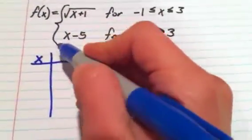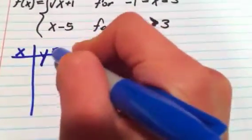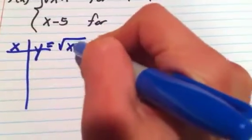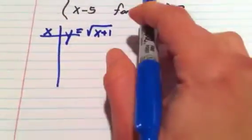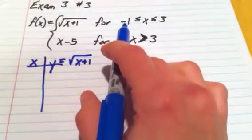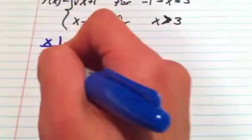So y will equal the square root of x plus 1 for x's that are between negative 1 and 3. So I'm going to put in x's between negative 1 and 3. So negative 1, 0, 1, 2, and 3.